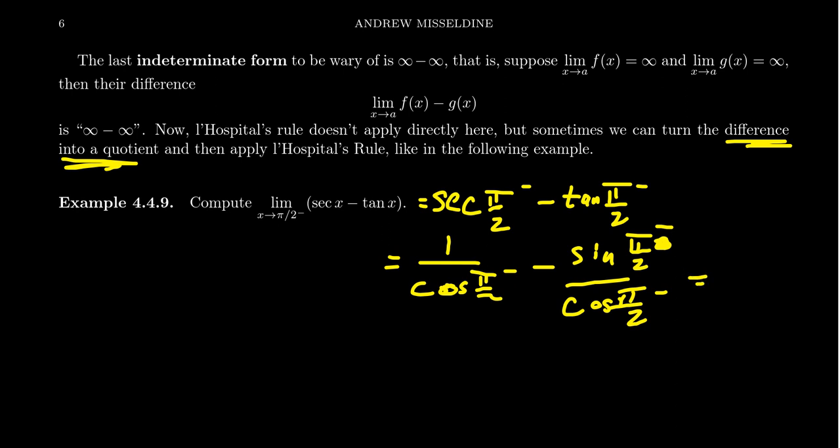Okay. And we're approaching 0 from above. So this should look like 1 over 0+ minus 1 over 0+. So this becomes exactly infinity minus infinity. Yowzers. So that's this indeterminate form.